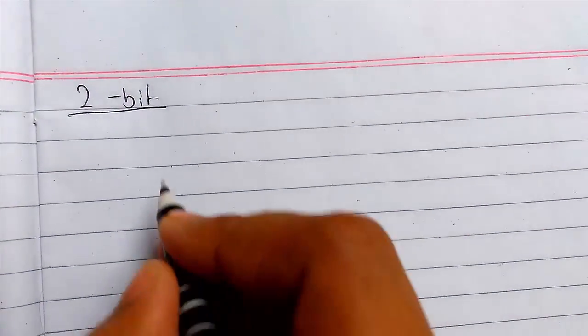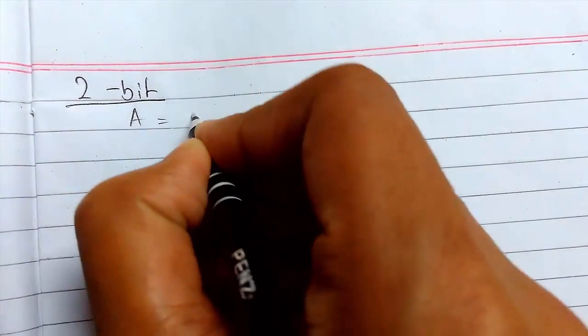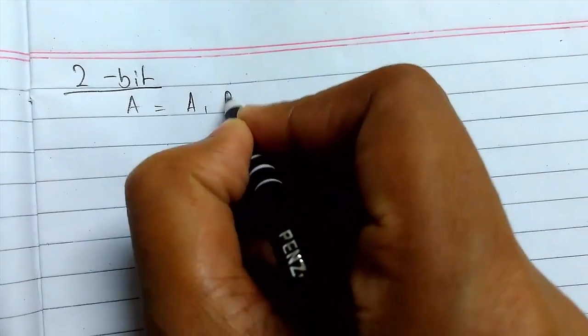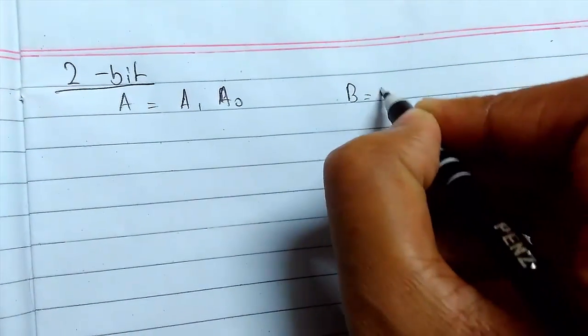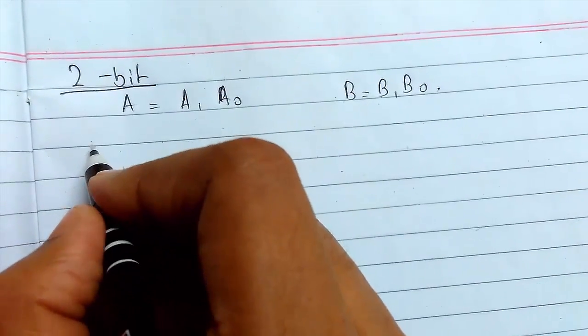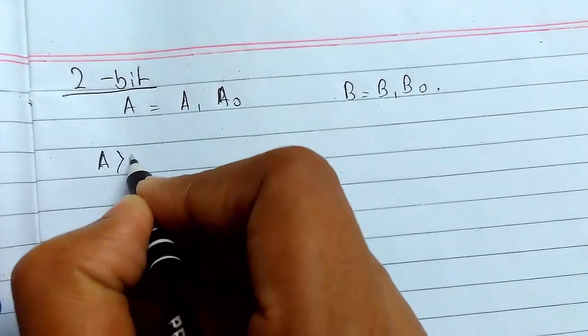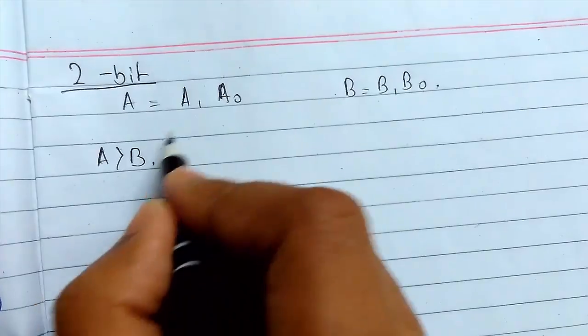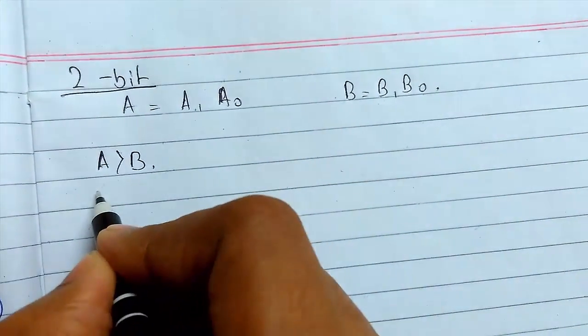Moving on, we have now the two bit case. Now we have the two numbers something like this. This represents a bit position. First of all we will see the case for when A is greater than B. For A is greater than B, either the MSB of A is greater than B.